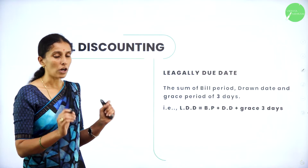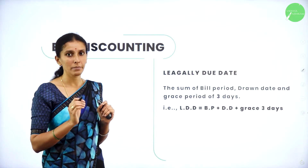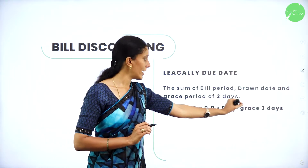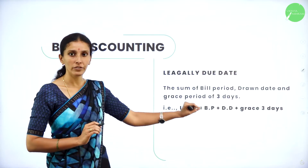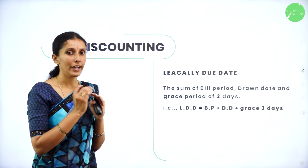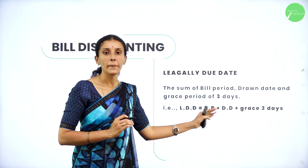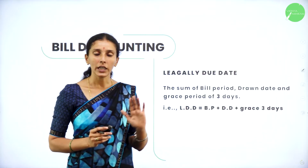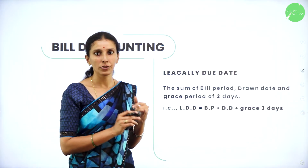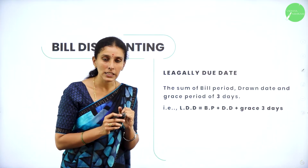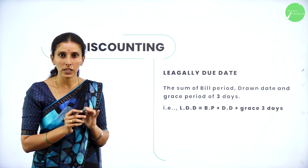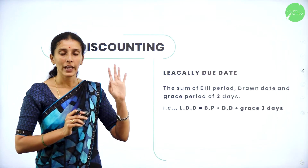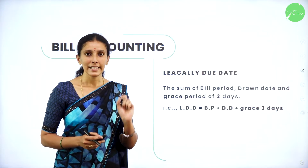Next is legally due date, shortly called LDD. The legally due date is the sum of the bill period, the drawn date, and a grace period of three days. That is the date of maturity when you are going to pay the bill as mentioned. So the important topics related to bill discounting are: banker's discount, true discount, banker's gain, face value, present value, and LDD — legally due date.